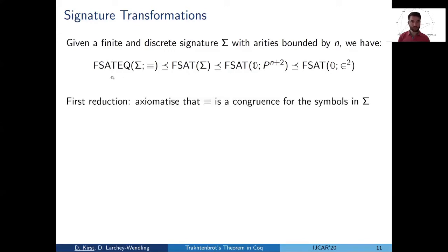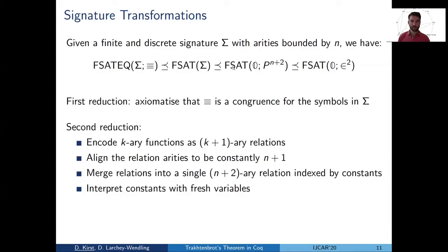The reduction in the middle is yet another chain, but all steps here are elementary. Basically what one does is one first encodes all function symbols as relations. Then the relations are merged into a single relation. On the fly, some constants are introduced that we have to get rid of again. But everything is as one would expect. However, there's a little stumbling stone because some of these intermediate reductions expect the initial model to be discrete.